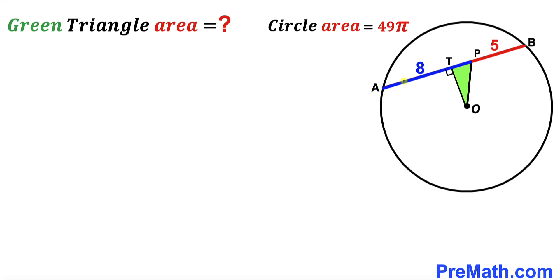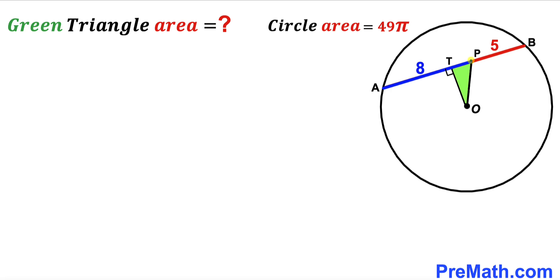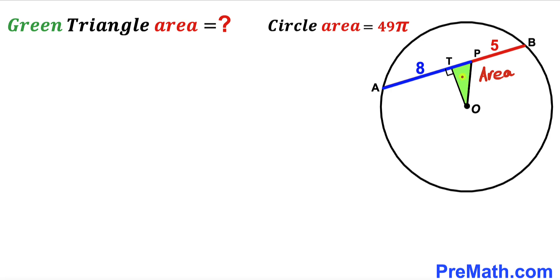Welcome to pre-math. In this video we have a chord AB in a circle with center O, such that the blue segment AP is 8 units and the red segment PB is 5 units. The circle area has been given as 49π square units, and our task is to calculate the area of the green shaded triangle OTP.